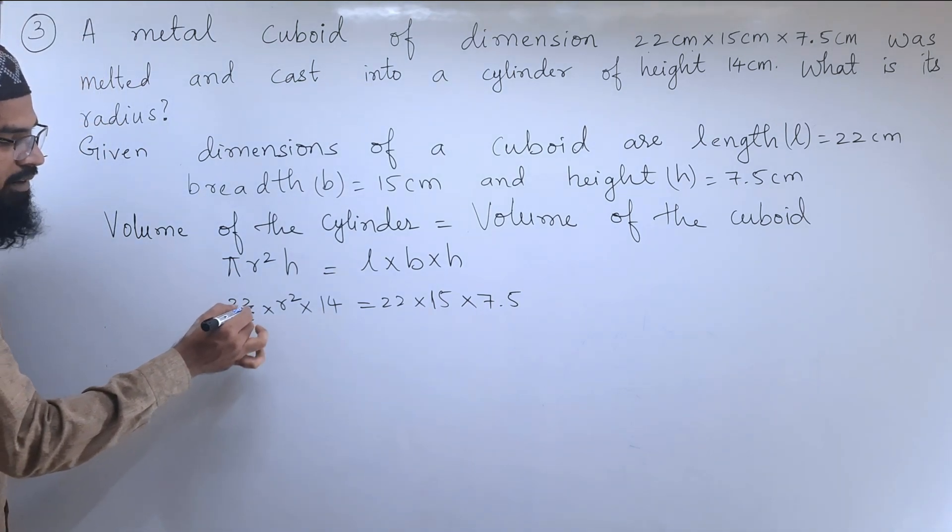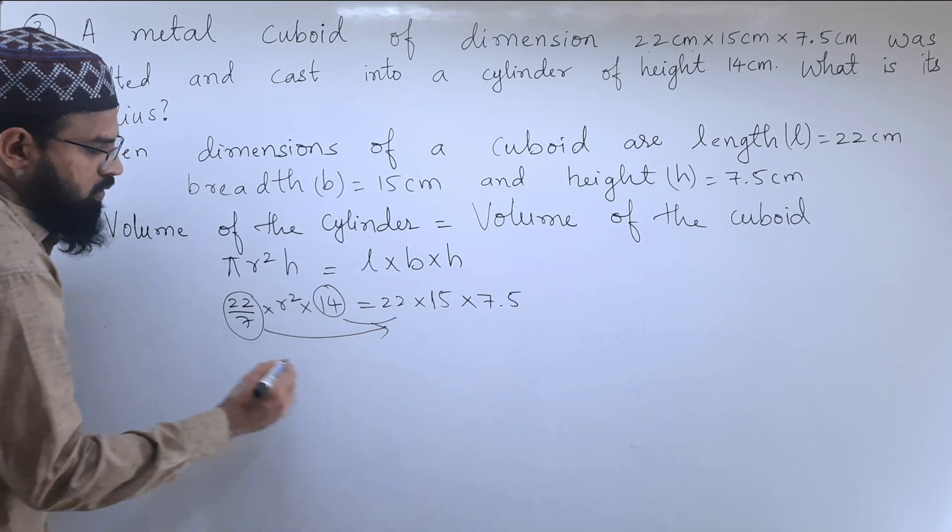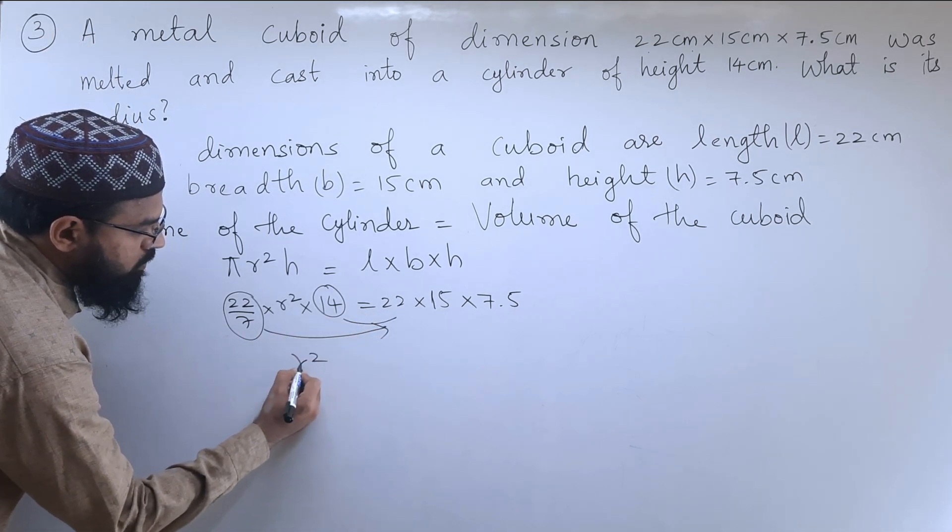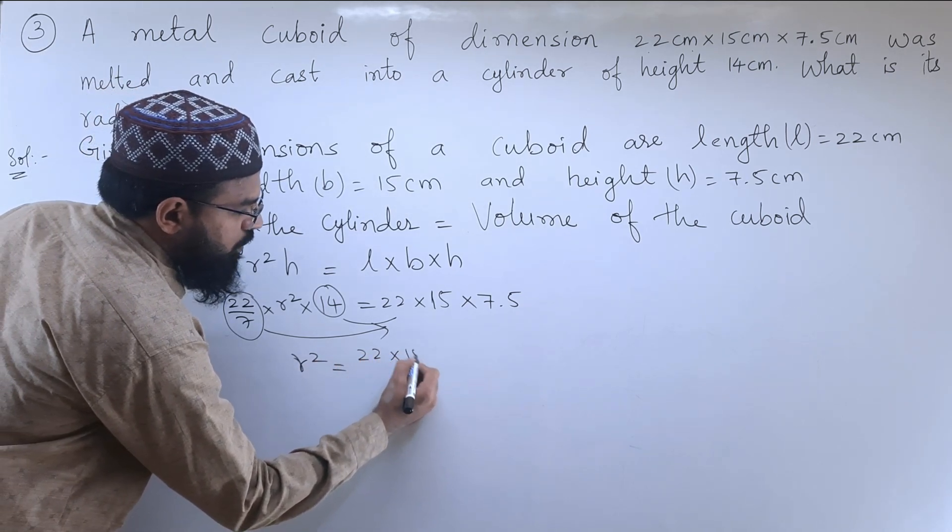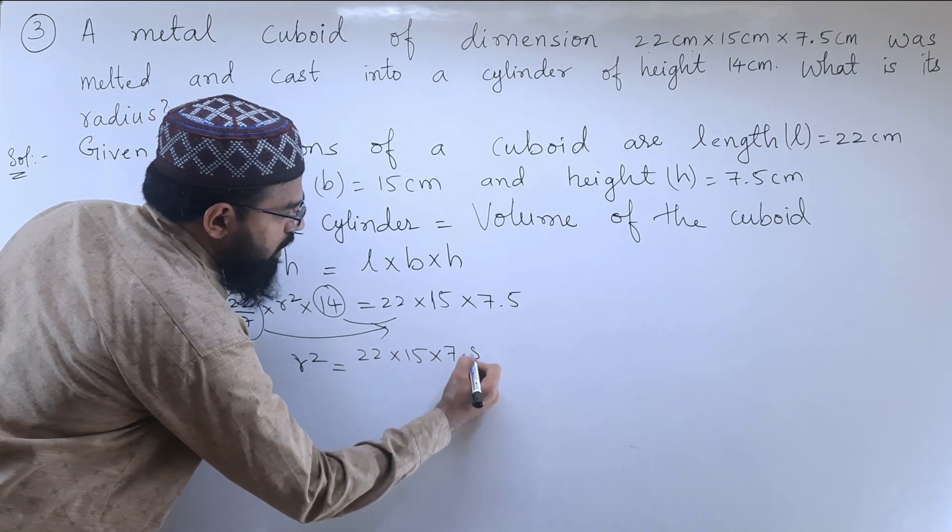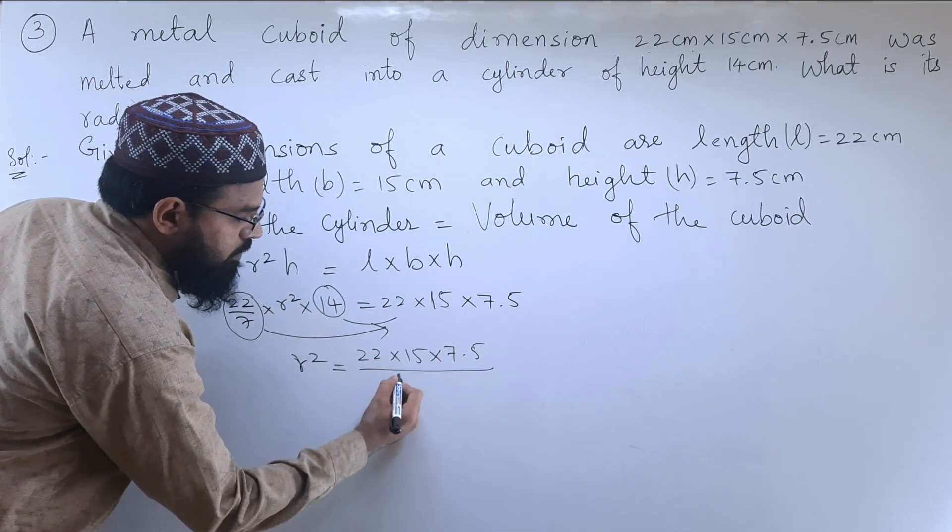Now we will send this 22 by 7 to that side. So R² is equal to 22 into 15 into 7.5 by this 14 comes down.